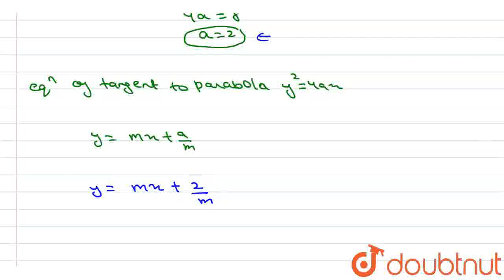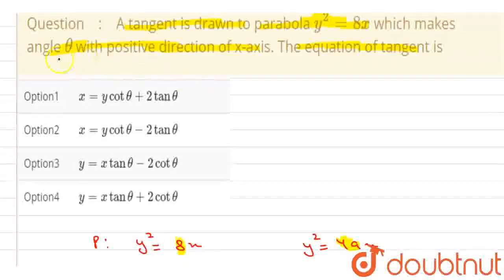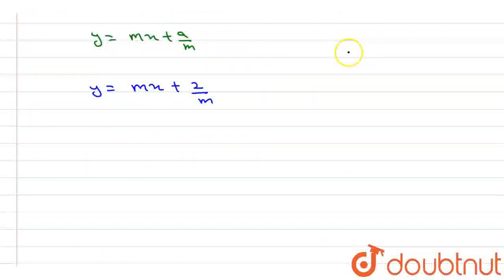And in the question it said that it makes angle theta with positive direction of x-axis. So we can write the slope in terms of theta, we can write as tan theta.